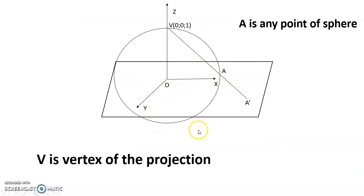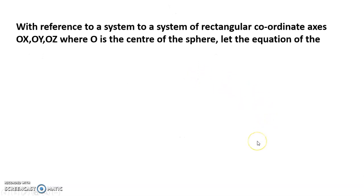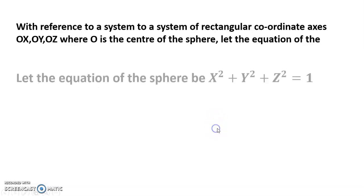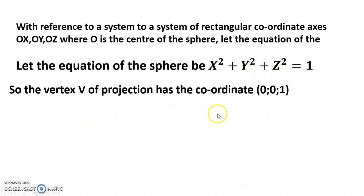This is the Riemann sphere, V is the vertex of the projection, and A is any point on the sphere. Analytically, we may proceed as follows. With reference to a system of rectangular coordinate axes OX, OY, and OZ, where O is the center of the sphere, let the equation of the sphere be x² + y² + z² = 1. So the vertex V of projection has coordinates (0, 0, 1).